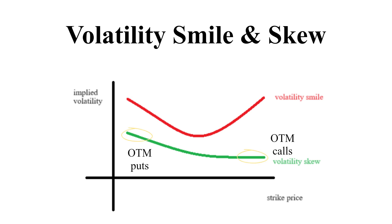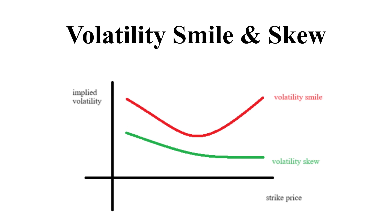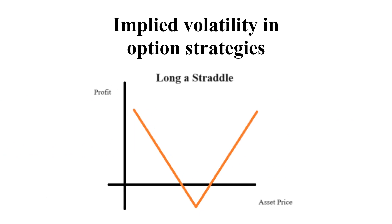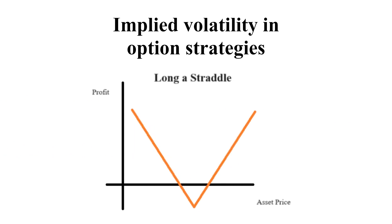The volatility smile changes to volatility skew — the green line on the below graph — when out-of-money put options have higher implied volatility than out-of-money call options. Indeed, out-of-money put options are in higher demand than out-of-money call options for the simple reason that they provide insurance or a safety net in extreme market events.